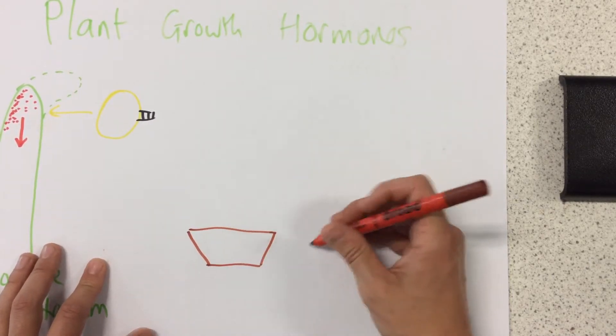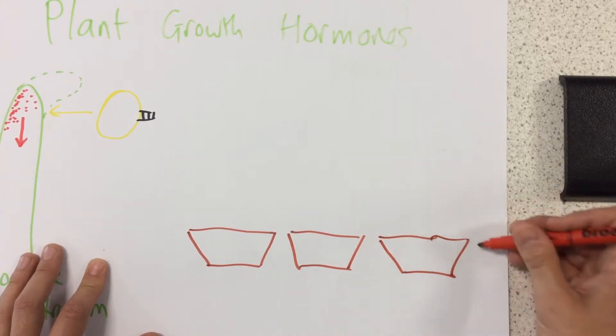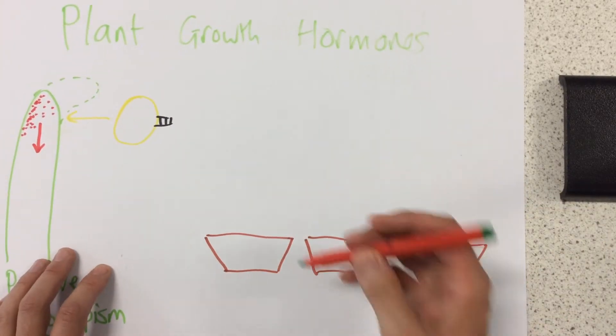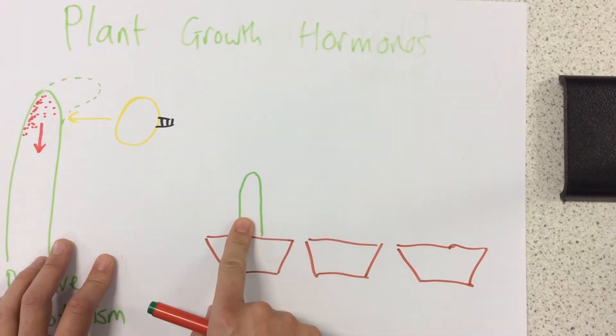So let's imagine we've got three different plants in three different conditions. So my first one is just completely normal. Nothing's been done to this one at all.